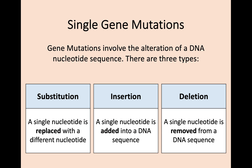So to start off with, we're going to be looking at two different forms of mutations. One is going to be single gene mutations, and another one is going to be chromosomal mutations. There's quite a lot of information in this part because you need to know the different forms of these different types of mutations and what their effect is. Single gene mutations involve the alteration of the DNA nucleotide sequence, and there are three different types.